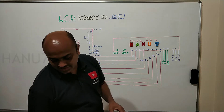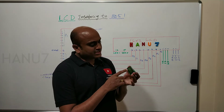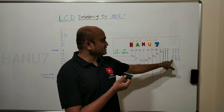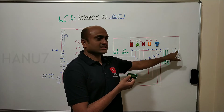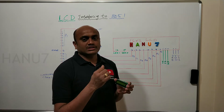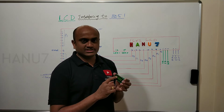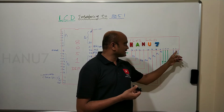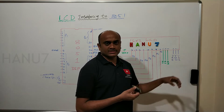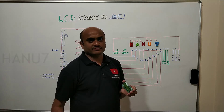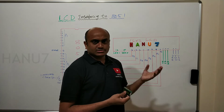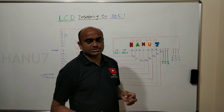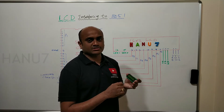LCD stands for liquid crystal display. To power on the device we use the first two pins, and to control brightness and contrast we use the third pin — the first is VCC, the second is ground, and the third adjusts brightness/contrast. For that we need a 10k potentiometer connected to those first three pins. I will show the pot connection in the hardware part; in hardware we can see how to change the brightness and contrast of the LCD.